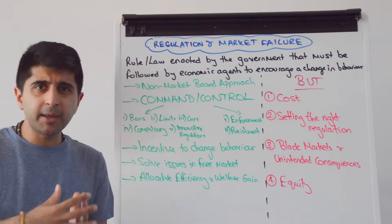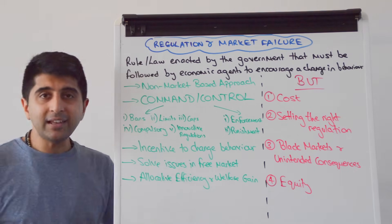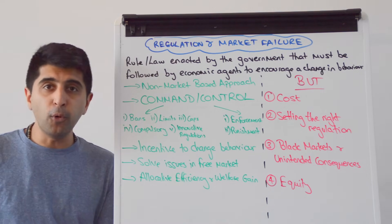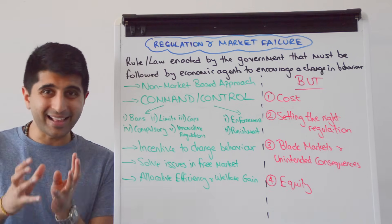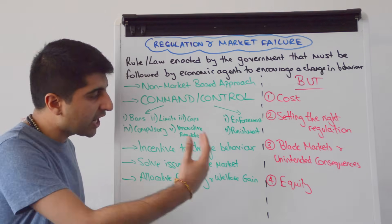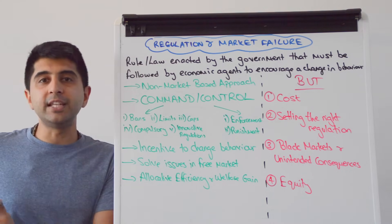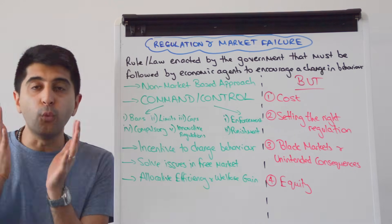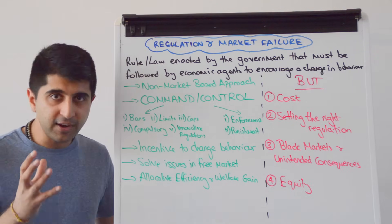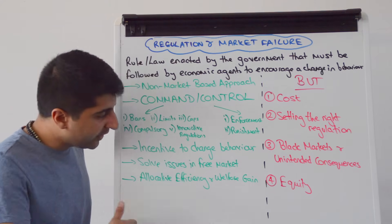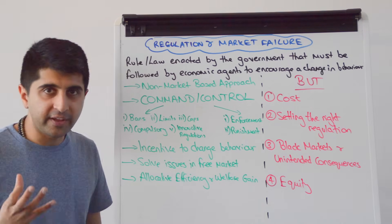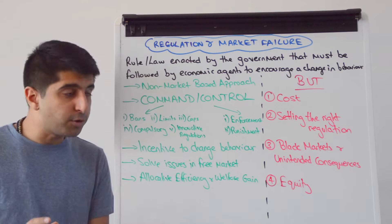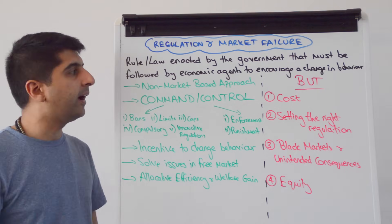If both the command and the control are strong, the incentive is for economic agents to change their behaviour — either to consume more, produce more, consume less, or produce less. The incentive is to move quantity towards the socially optimum level, solving issues in the free market without working through the free market. The end result is allocative efficiency, a welfare gain, and welfare maximised in the market. The non-market-based approach is still trying to get to Q* in the market.